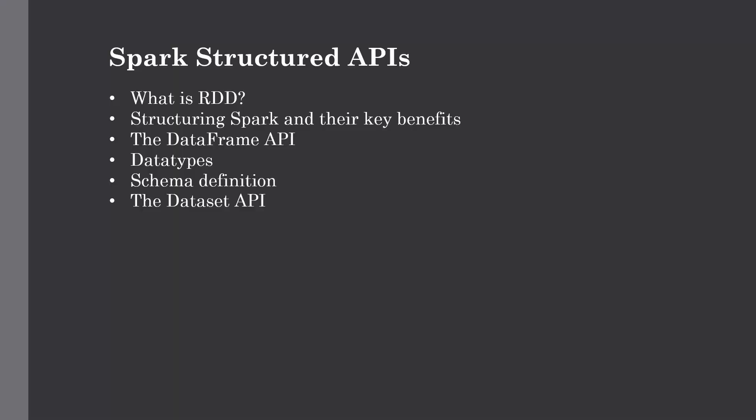In this video we are going to discuss the main motivation behind adding structure to Apache Spark, and how this motivation led to creating some high-level APIs which are very popular today — namely DataFrames and Datasets — and their unification in Spark version 2.0 and above. When Spark SQL was introduced in the early Spark releases, it was followed by the DataFrame API.